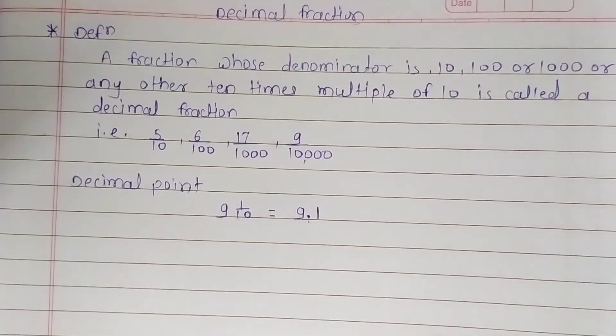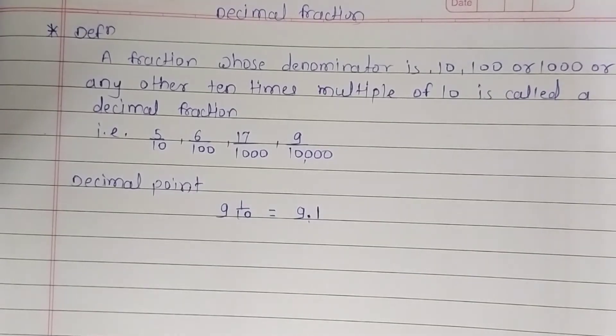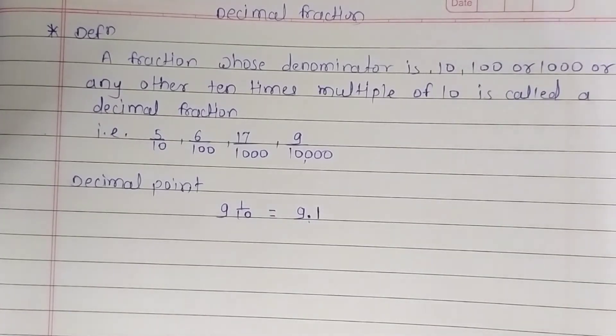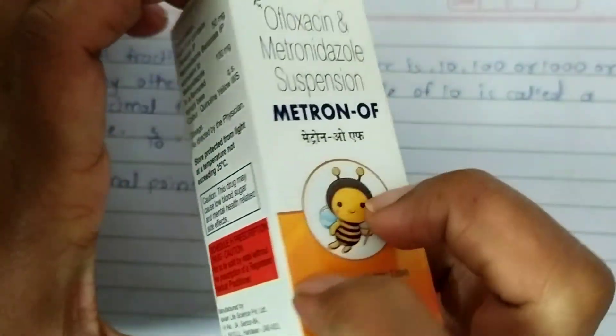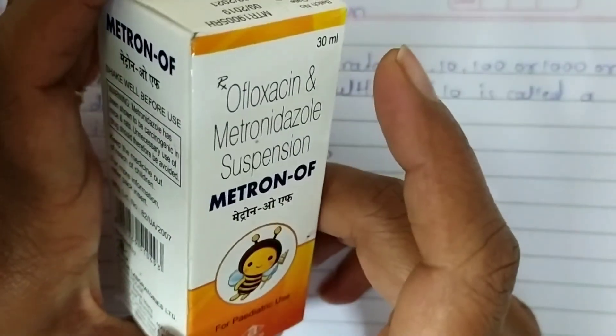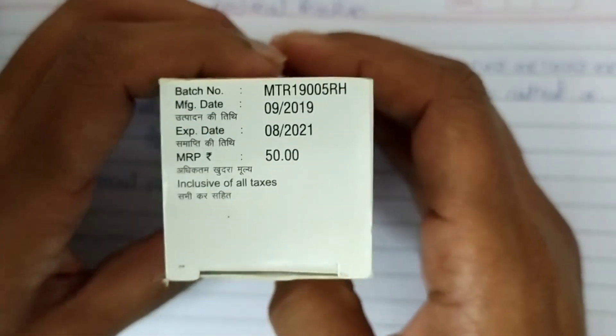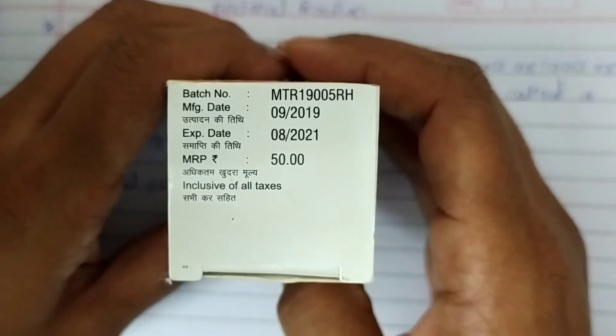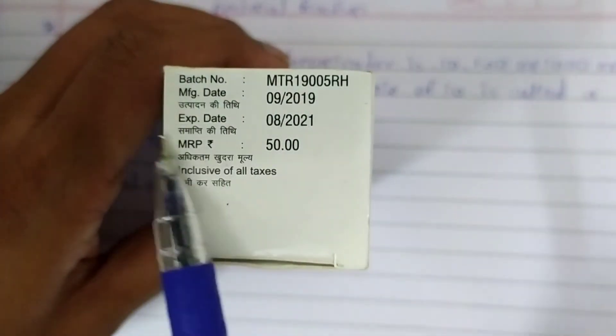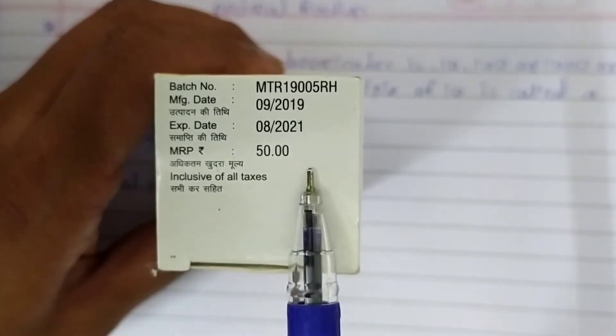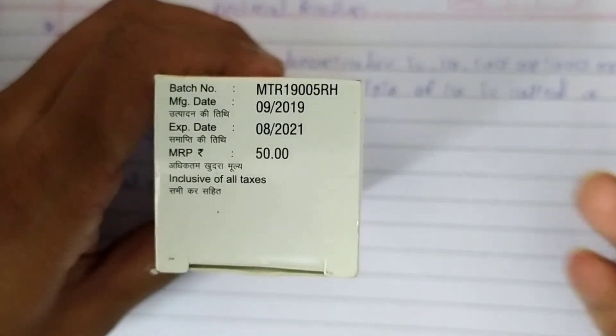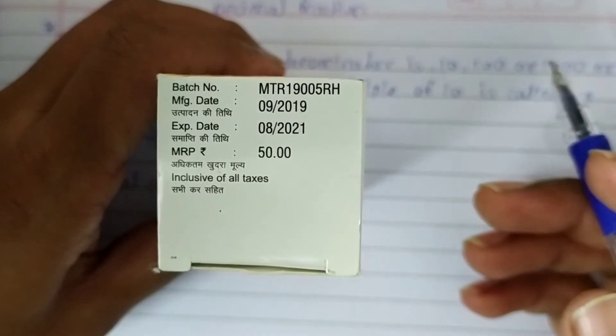He can sell it below 45 rupees, but maximum he can take rupees 45 for that product. That is called MRP, maximum retail price of any product. This medicine box, here also you can see the maximum retail price of that product.